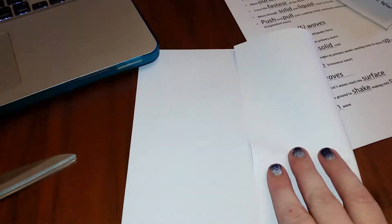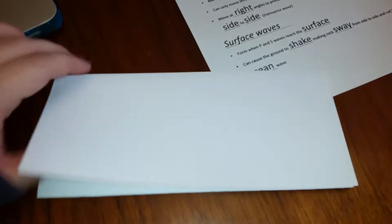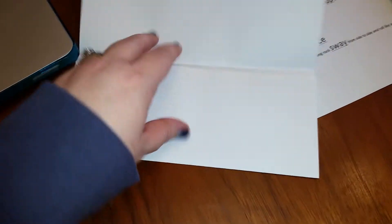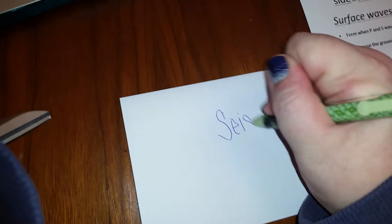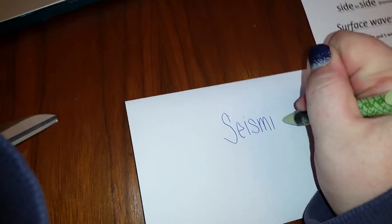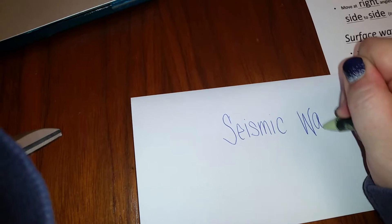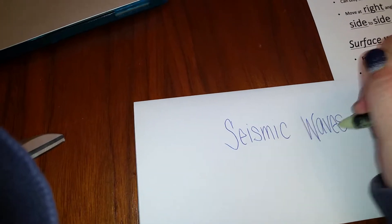Alright, so to make the foldable you're going to take your white piece of paper that you have—it should be a full sheet. You're going to fold it like a pamphlet so it's going to be in three perfect sections. Okay, it's in three sections. You guys are using pencil, otherwise you'll be able to see through the paper to read it when you're studying. I have to use pen because the pencil doesn't show up as well. So you're going to write seismic waves on the front.